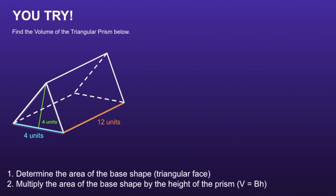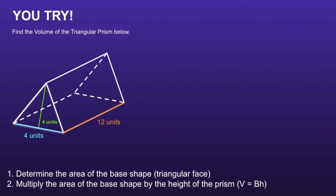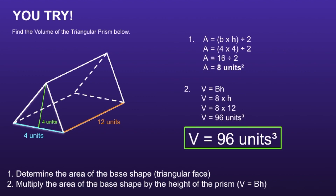Alright, I have another problem I want you to try. I would recommend you pause the video, find the volume of the triangular prism, and resume when you're ready to see if your solution is correct. Alright, let's take a look. The volume of the triangular prism will be 96 units cubed. If you had this one incorrect, I would recommend you pause the video and see if you can find your mistake. Thank you for watching!